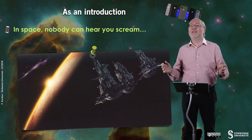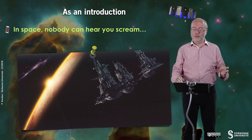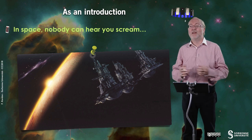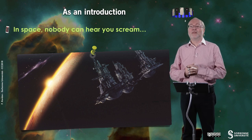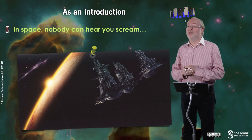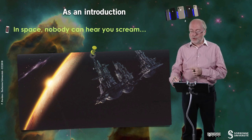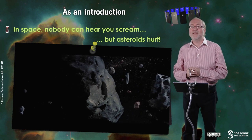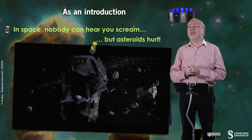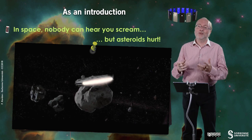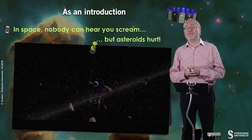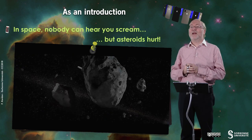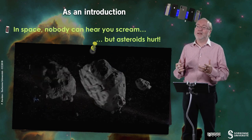In space nobody can hear you scream, as you know, so you probably know this vessel that is a very classical vessel of science fiction movies, which is Nostromo. But also you might remember a very nice scene from Star Wars, for me the second episode, because it was the second Star Wars in 1980, where you see that asteroids can hurt.